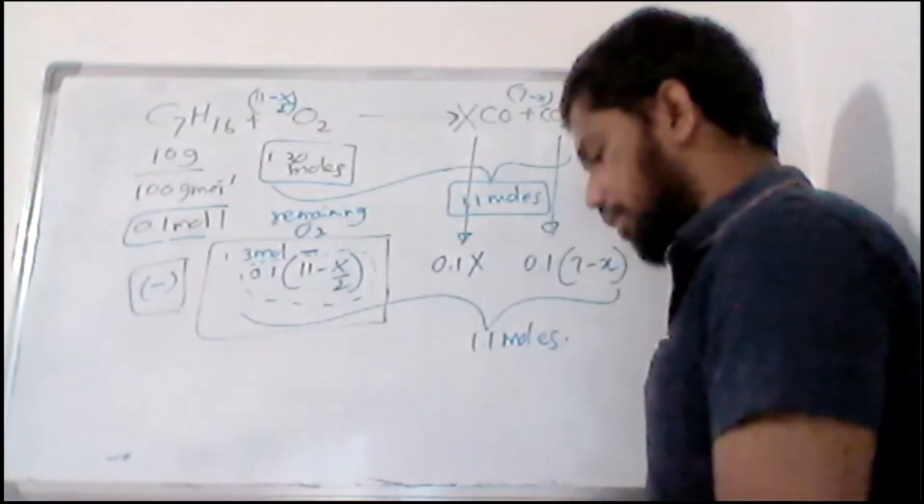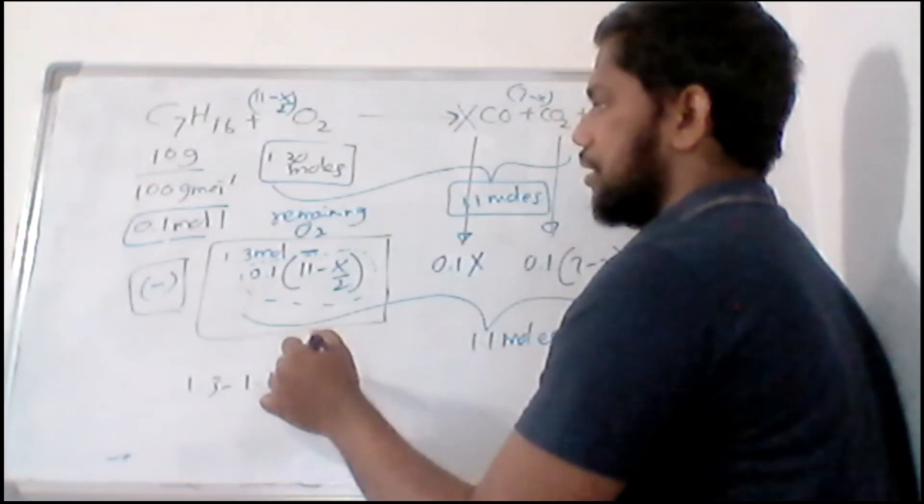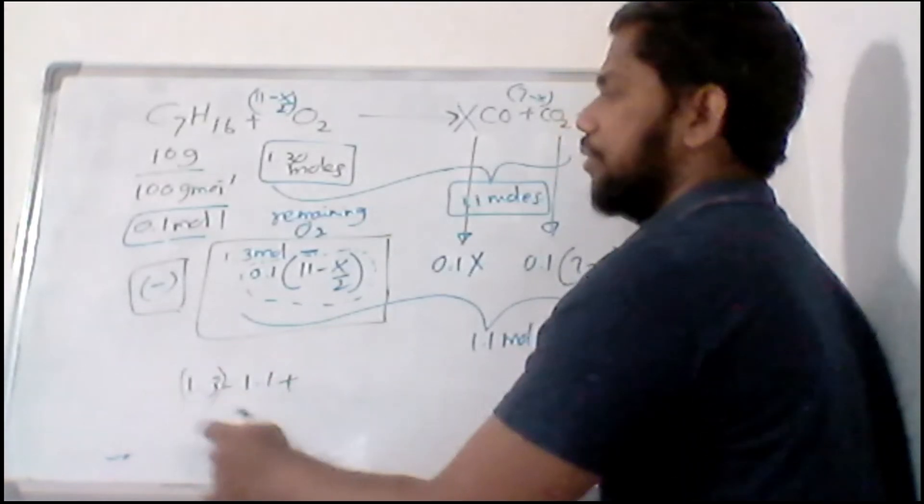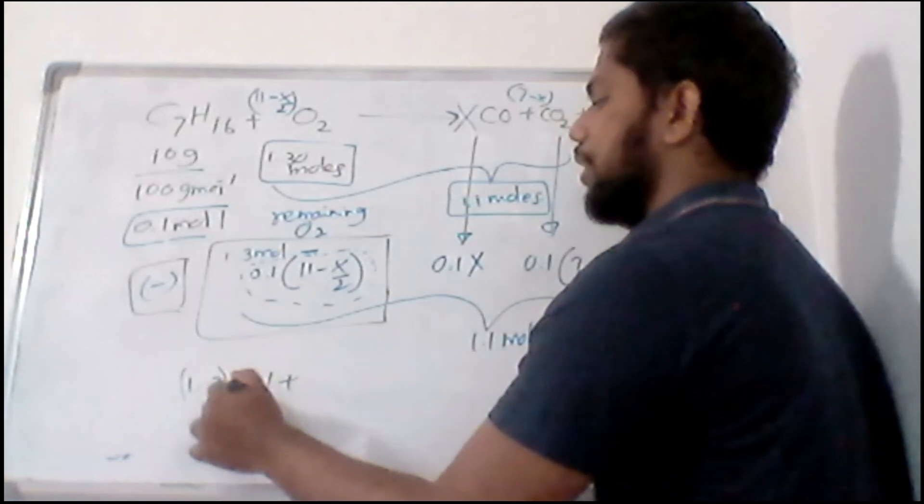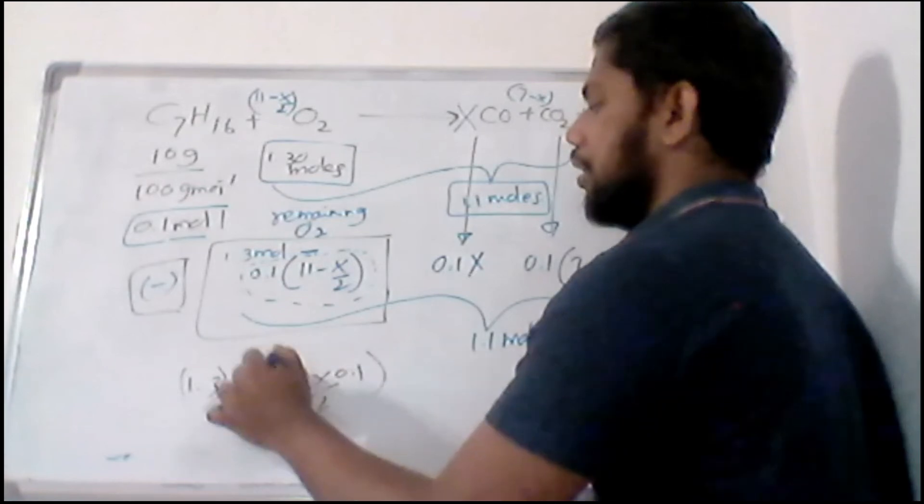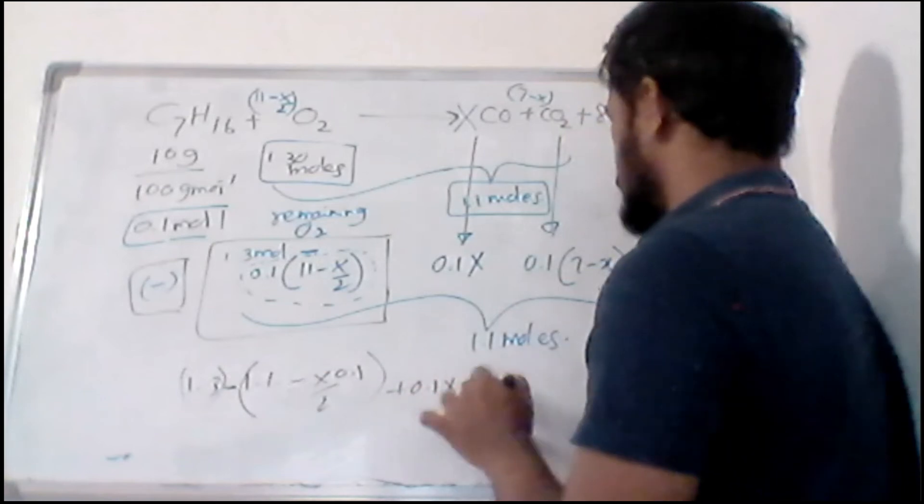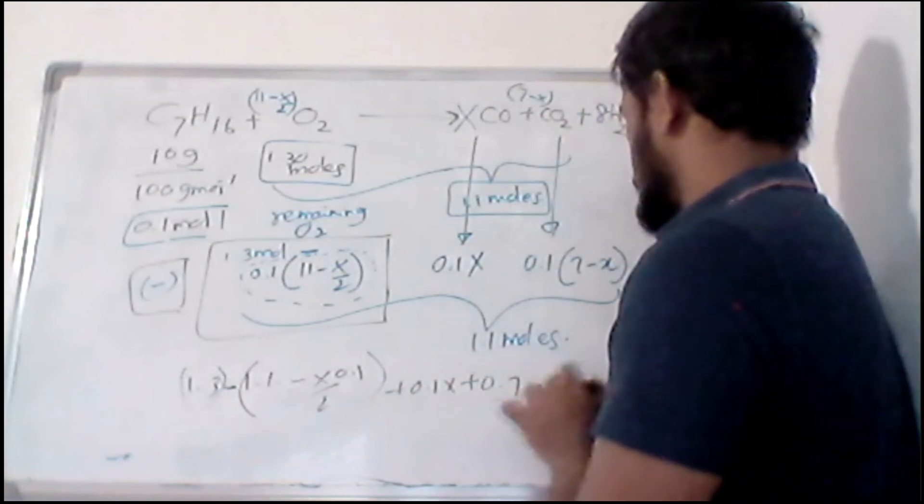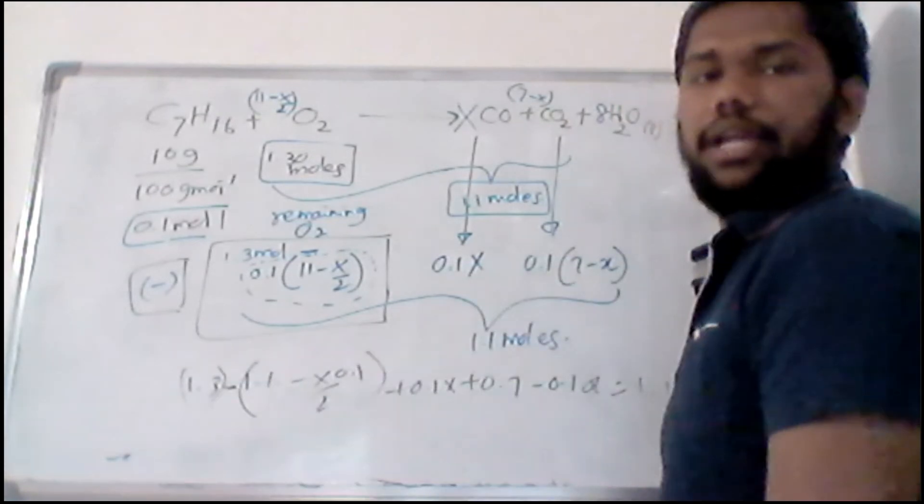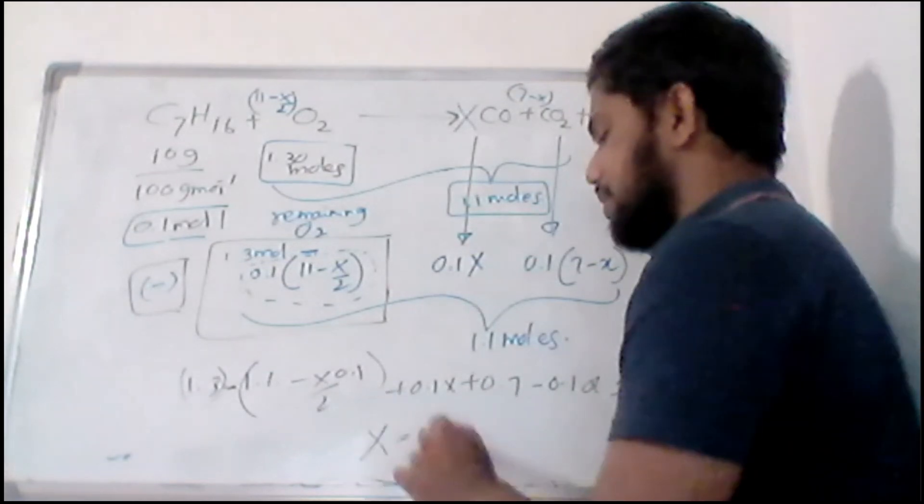And when you have this one, then what you have to do here is 1.3 minus 1.1 here. And plus, yeah, basically you can separately keep here is 1.3. Then minus is the amount that you are going to put here. So there will be minus here, x over 2, 0.1. Now then this becomes minus and this becomes plus. And 0.1x, 0.7 minus 0.1x is equal to 1.1 moles. And when you solve this, this is a simple calculation. Just a very simple calculation.